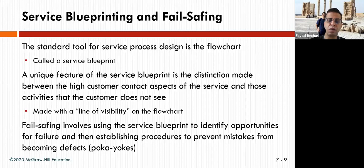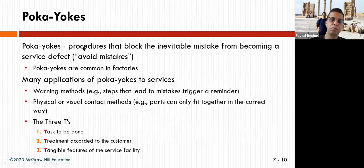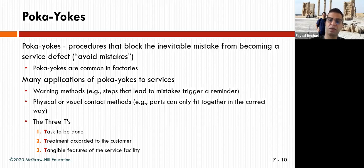Fail-saving involves using a service blueprint to identify opportunities for failure — it's like disaster recovery, but situational — and then establishing procedures to prevent these mistakes from becoming defects. This is called poka-yoke, the Japanese way of doing it, a procedure that blocks inevitable mistakes from becoming a service defect.